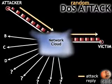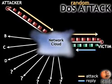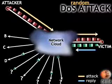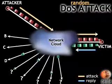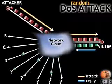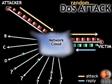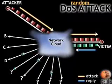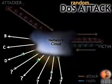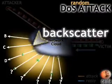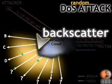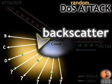The victim attempts to reply to each request by sending a reply packet to the presumed sender listed on the attack packet's header. The reply packets are simply discarded by the recipients, since the recipients never actually requested information from the victim. We refer to this flurry of reply packets as backscatter, since the reply packets scatter back out from the victim to the random recipients.